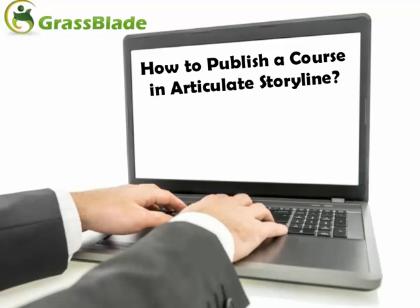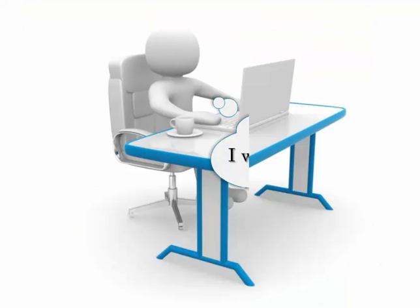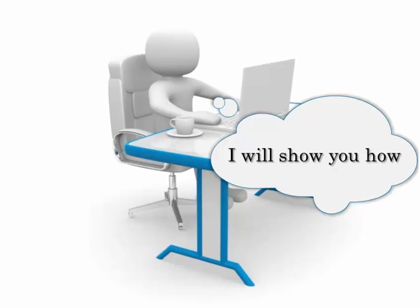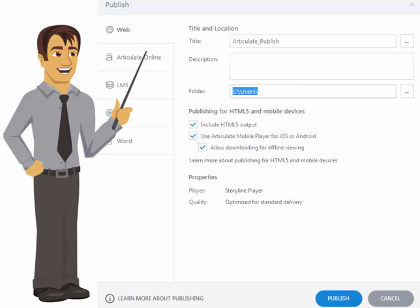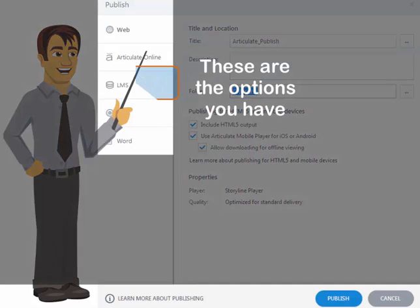Do you know how to publish a course in Articulate Storyline? I will show you how. Click the Publish button, then go to LMS.